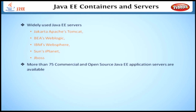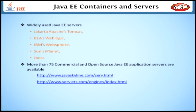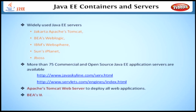If you want to see all of the servers, their manufacturers and features, refer to these links. Throughout this course, we will use Apache's Tomcat web server to deploy all web applications. Later in this course, we will use BEA's WebLogic server for deploying all the Enterprise Beans applications. We will discuss later in detail about how the applications are deployed in these servers.